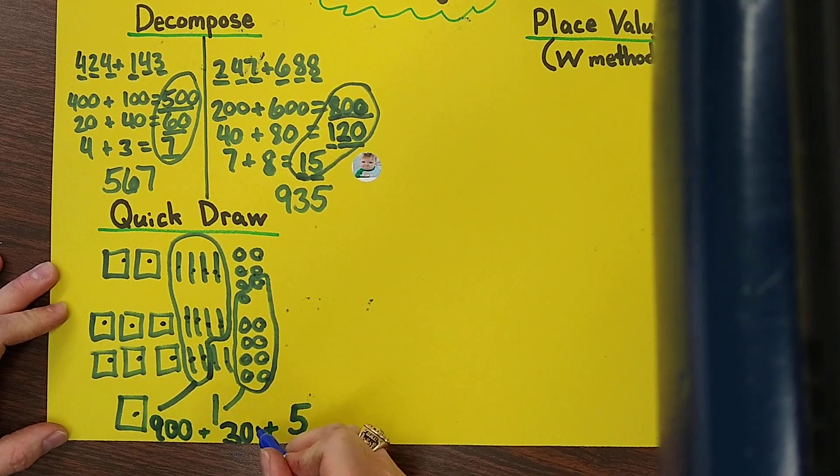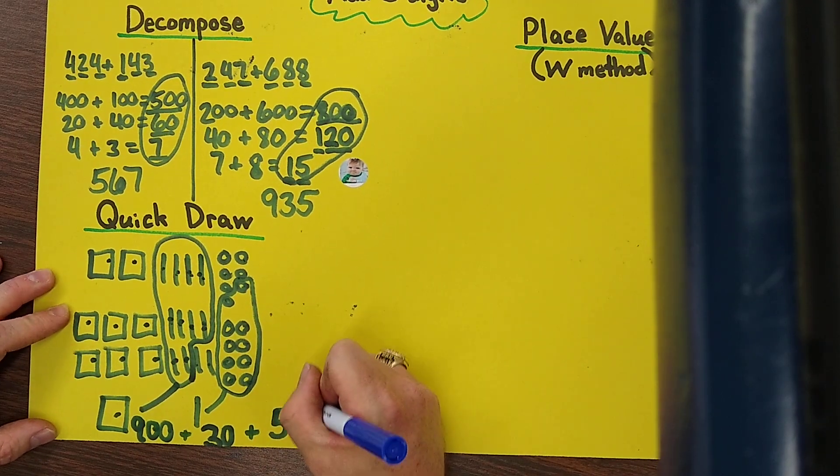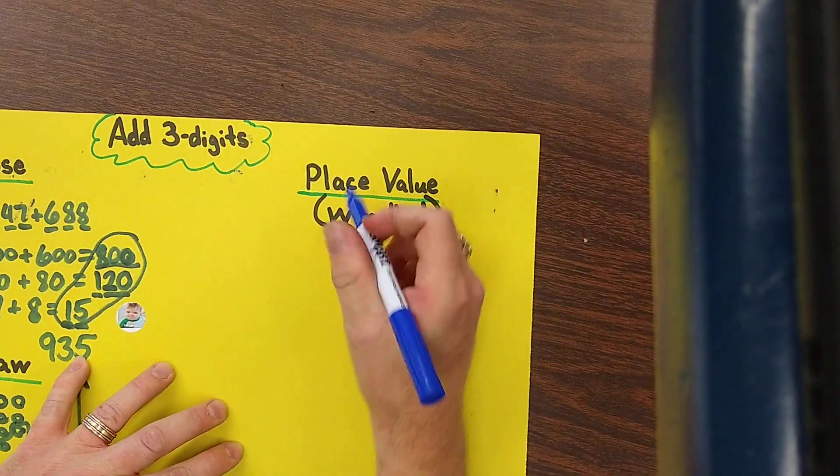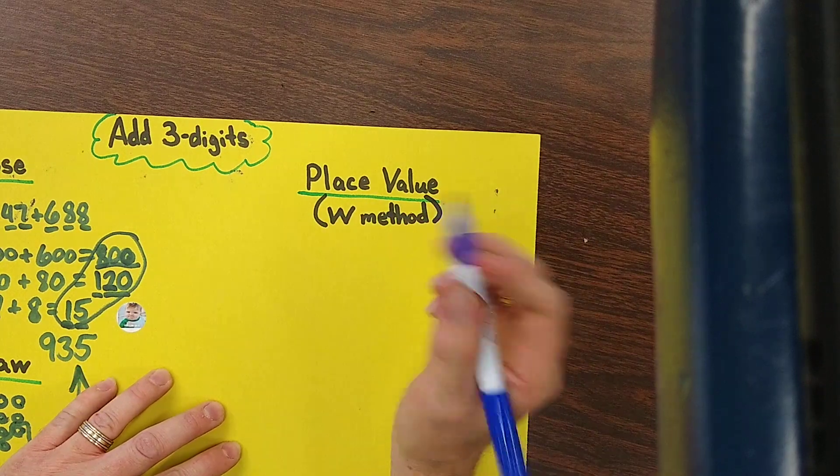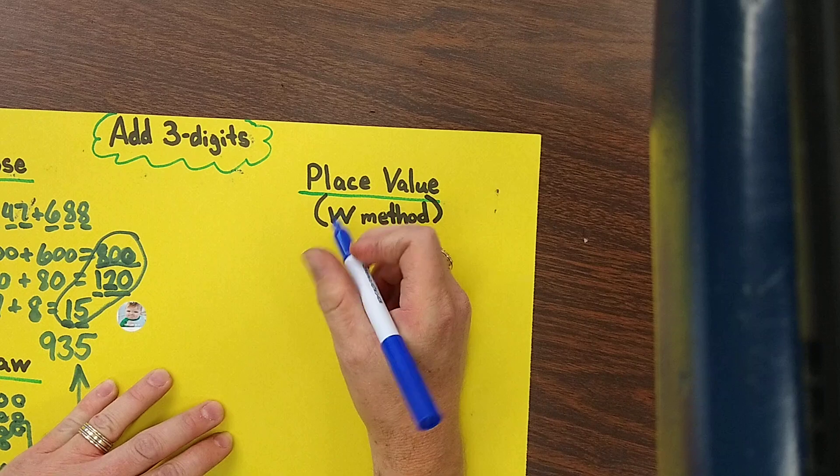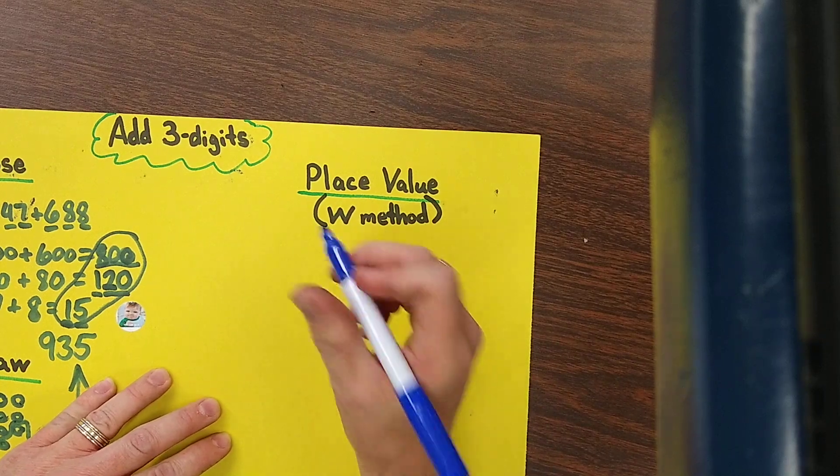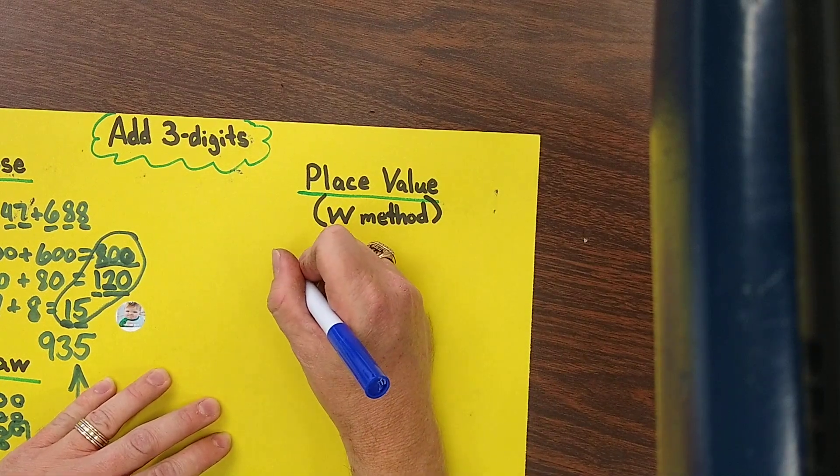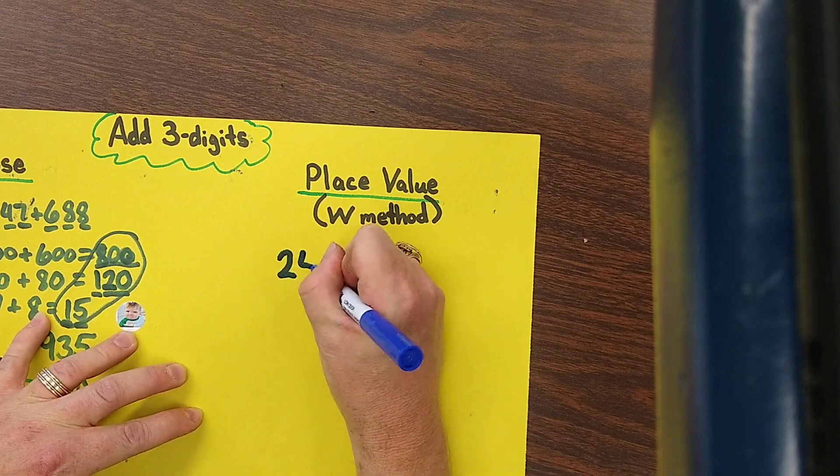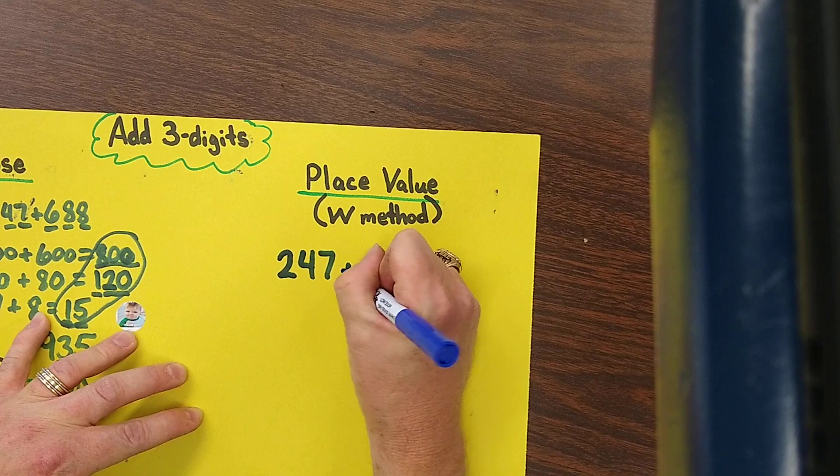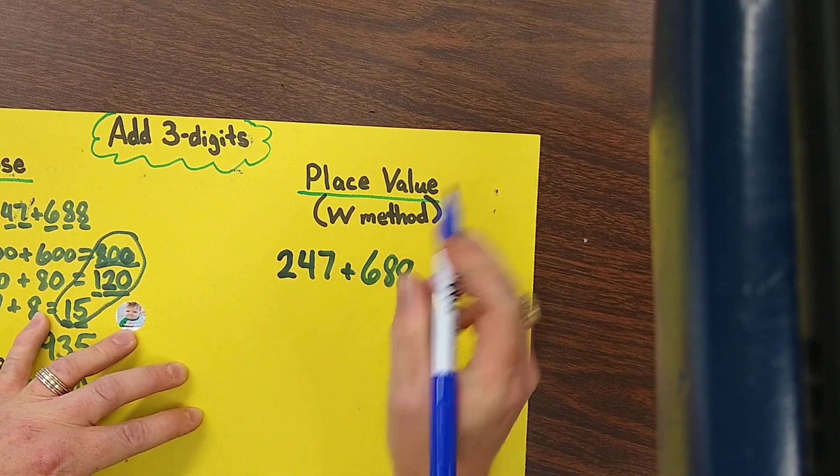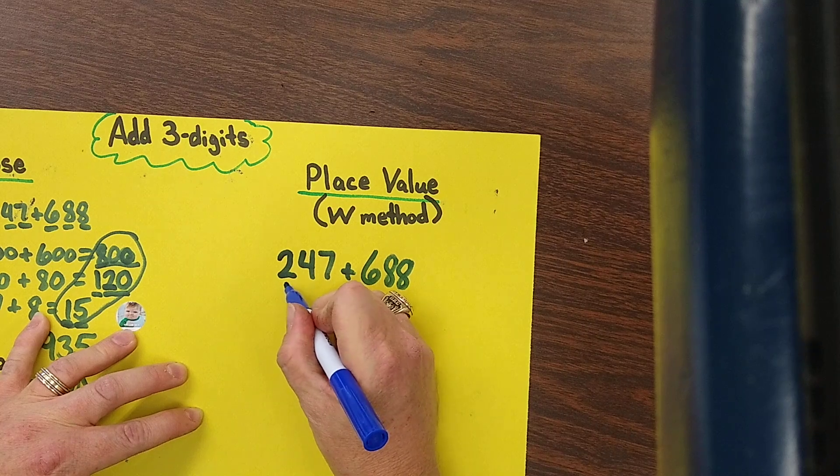One more strategy that we'll look at today is the place value, I call it the W method, not quite sure what the real term is for it, but we're gonna work it out. We'll go with the one where we have to regroup because those are always the more difficult ones. And if you're able to do those, the other ones are piece of cake.